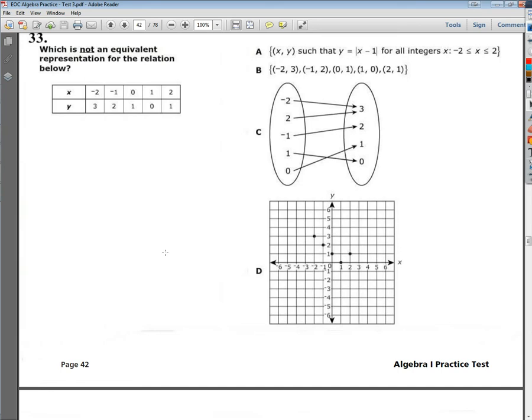The question says, which is not an equivalent representation for the relation below? Now, it gives you an x and y table, and you should remember that the x values represent your domains or your inputs or your independent variables, and your y's represent your ranges, outputs, or your dependent variables, because without the x there's no reference point for y.